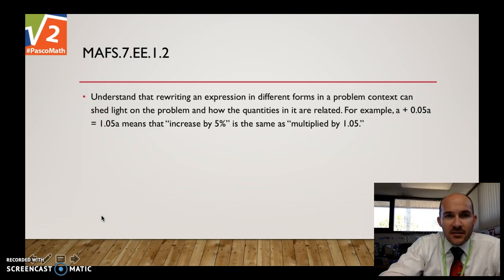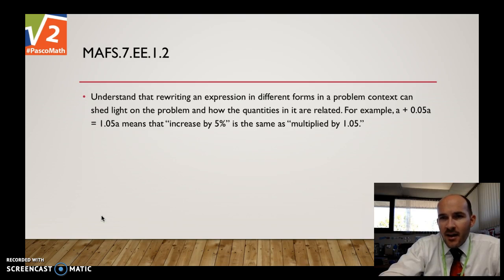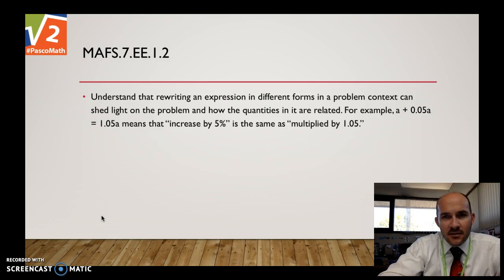So the standard itself says: understand that rewriting an expression in different forms in a problem context can shed light on the problem and how the quantities in it are related. For example, a plus five hundredths a equals one and five hundredths a, meaning that an increase by 5% is the same as multiplied by one and five hundredths.